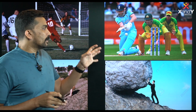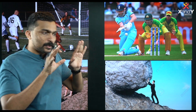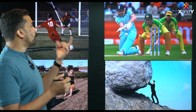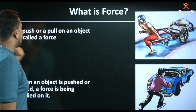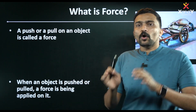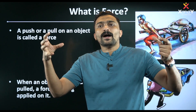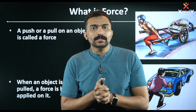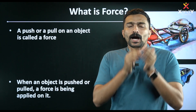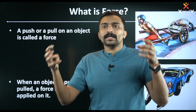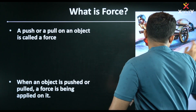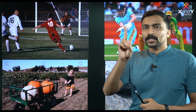Then, we have two categories. A push or pull on an object is called force. When an object is pushed or pulled, the force is being applied on it. Force always involves two objects — an interaction between them. Examples include a football player kicking, or pushing a cart. Force is applied between two objects.